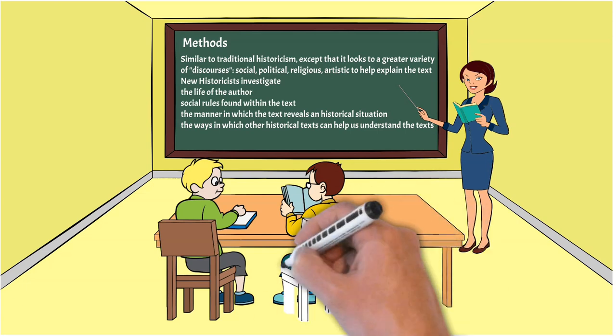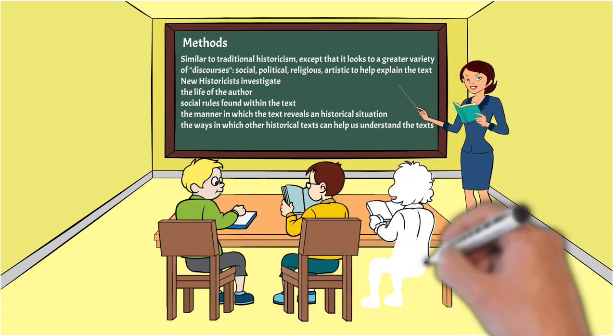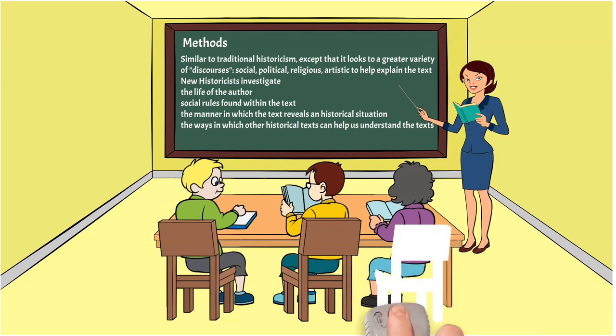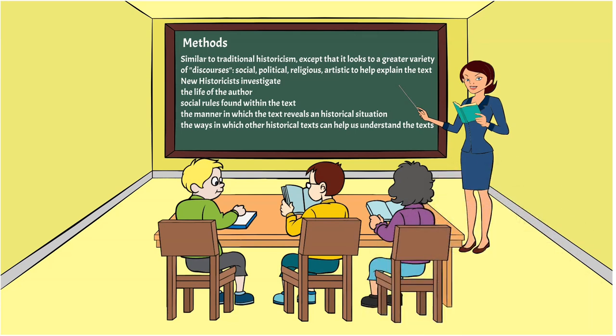New historicists investigate in that way and they might also incorporate the life of the author or the social rules found within the text, the manner in which the text reveals its historical situations, and the ways in which other historical texts can help us understand the text. So pretty much the focus is on history, but on particular histories of texts themselves or the textual conditions within which they were produced.